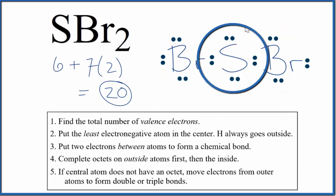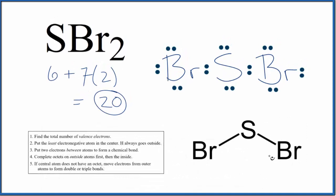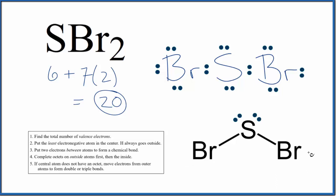So this is the Lewis structure for SBr2, Sulfur Dibromide. If we look at the molecular geometry, we see a bent molecular geometry. That's because the two lone pairs on top of the Sulfur are pushing the bromine atoms down — we don't show the lone pairs in the final structure. That's why we have this bent molecular geometry. This is Dr. V with the Lewis structure for SBr2, Sulfur Dibromide.